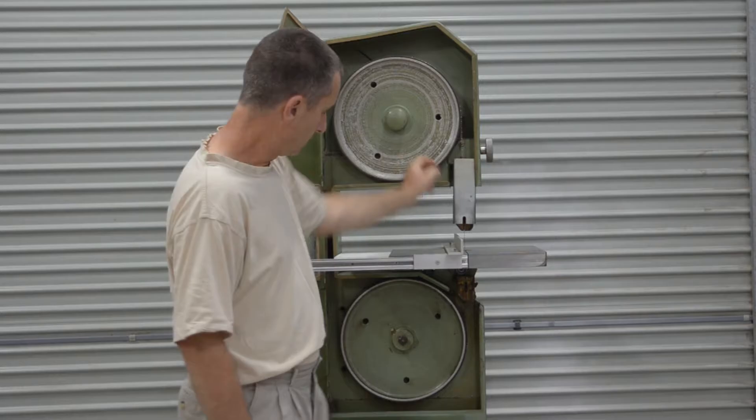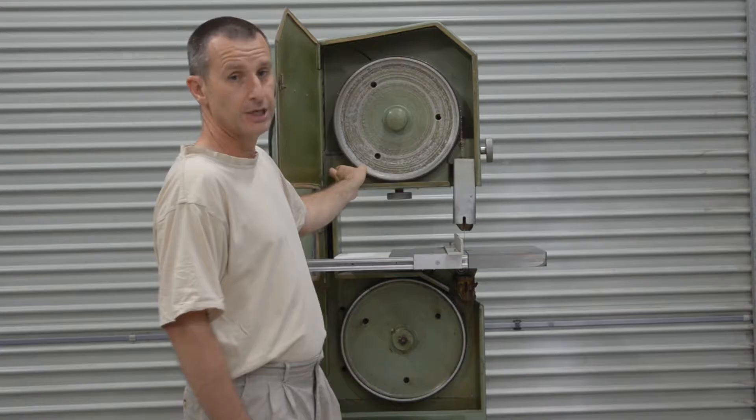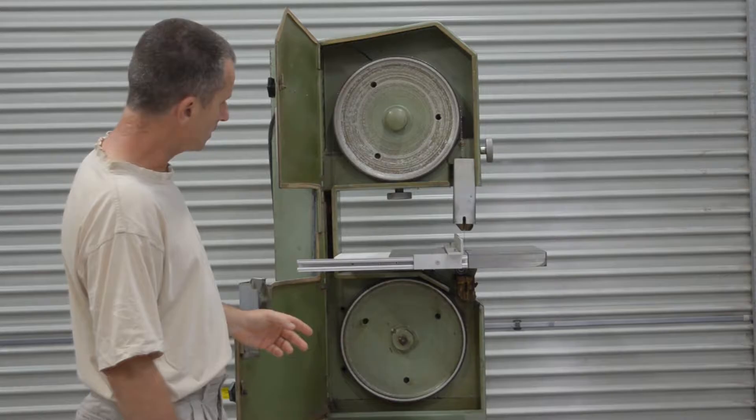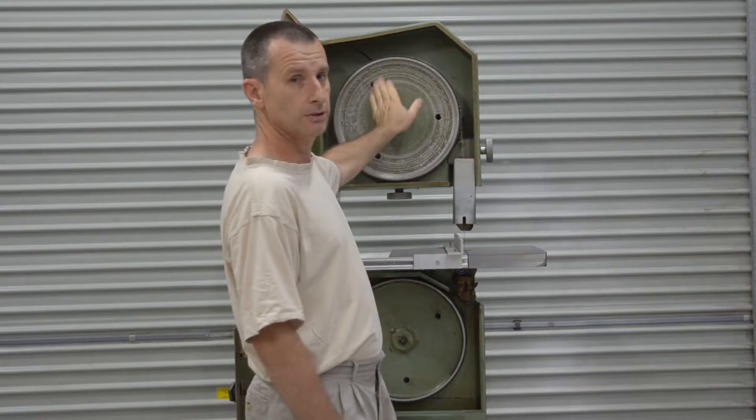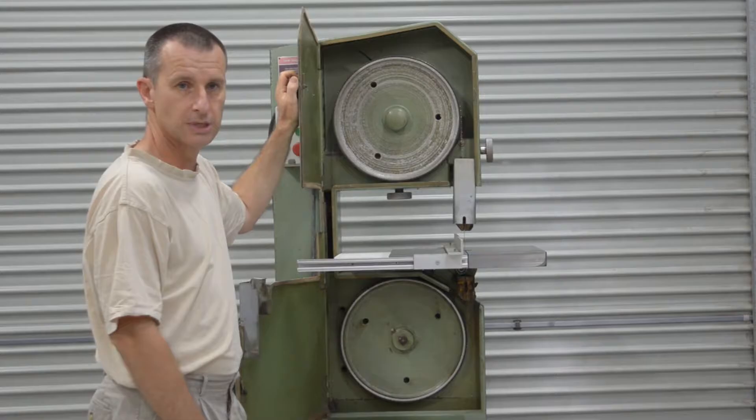So I guess I'll begin at the beginning. This is a bandsaw. The bandsaw consists of two major components: lower band wheel and upper band wheel. The lower band wheel is powered. The upper band wheel is driven, in effect, by the actual bandsaw blade.